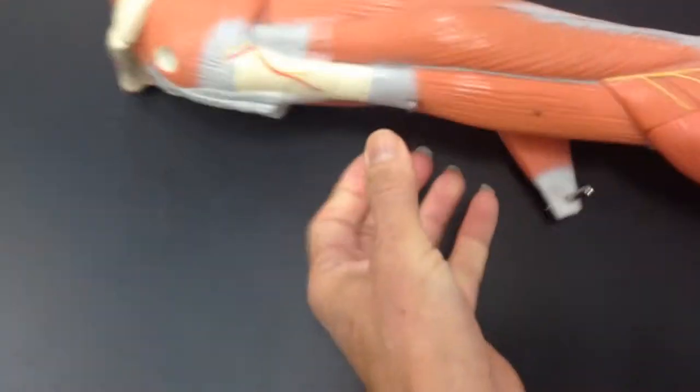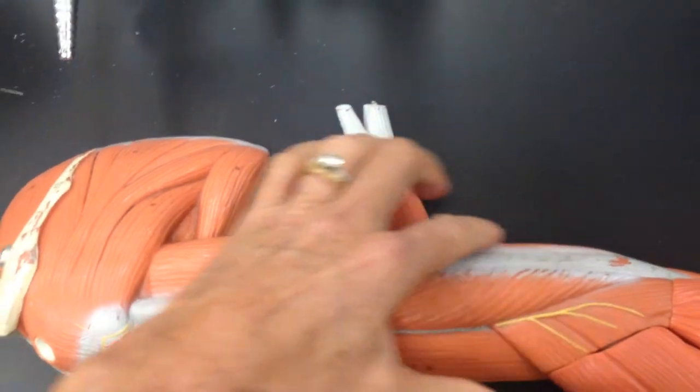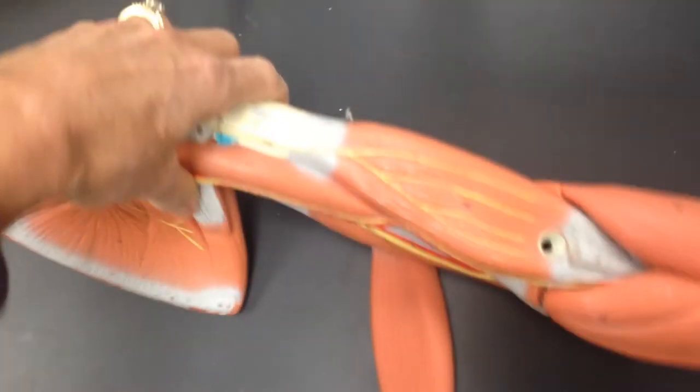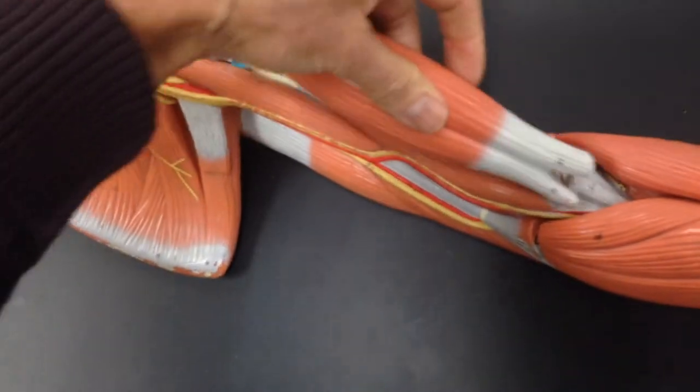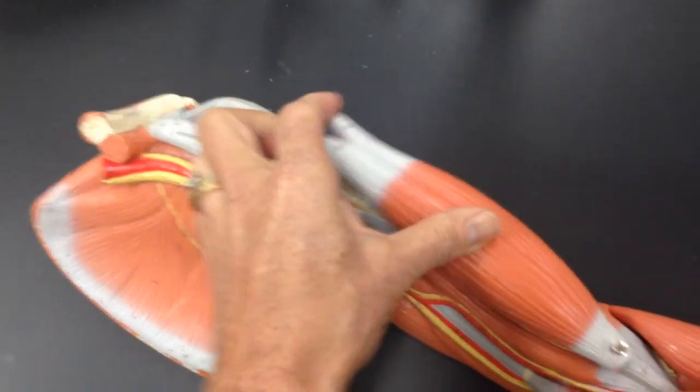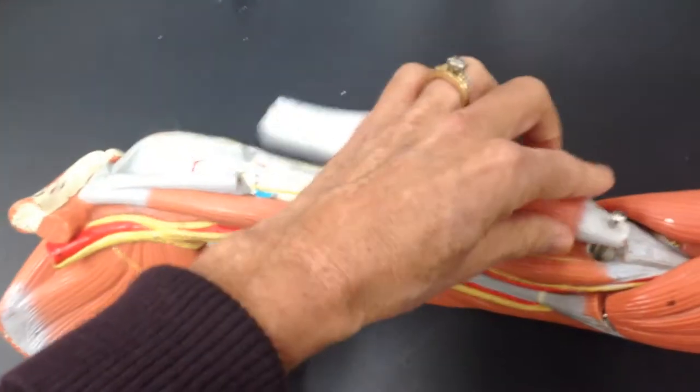In the back of the arm are the triceps, and in the front, that just fell off, is the bicep. Notice the bicep has two tendons coming here, which makes it the bicep.